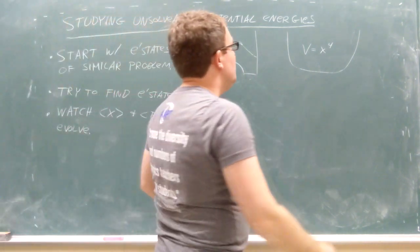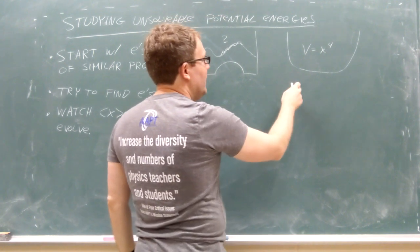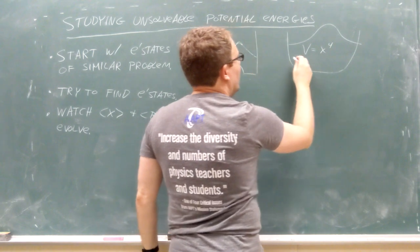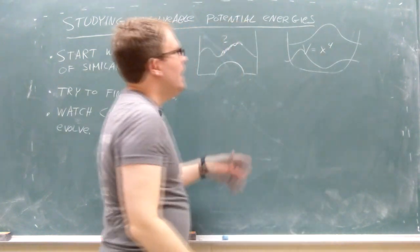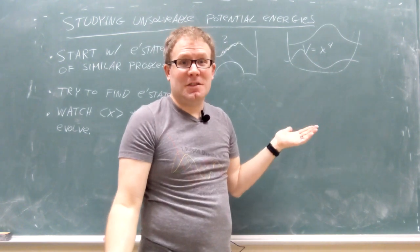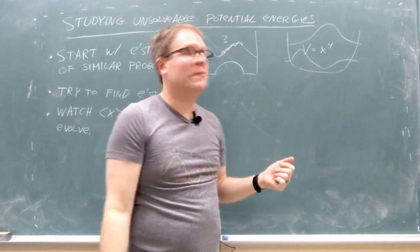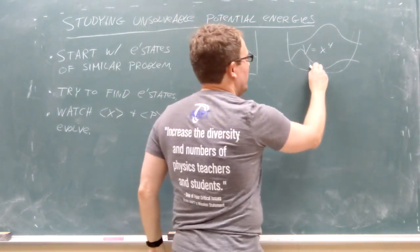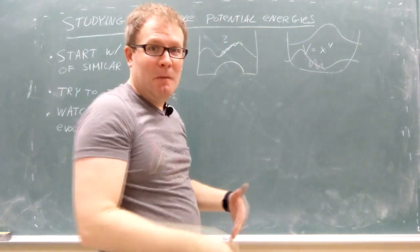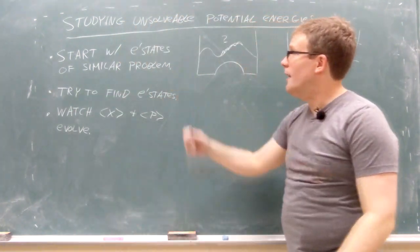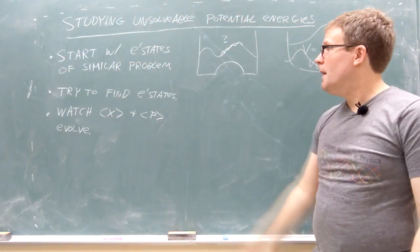Similarly for this one, you might start with the eigenstates of the harmonic oscillator, so those Gaussians times the Hermite polynomials. Again, you'll still see them bounce back and forth because that's intuitively what has to happen. But what happens to the wave function itself? Where does it break up and start to get extra bumps and wiggles and things like that? That's one thing you can try - eigenstates from a similar problem.